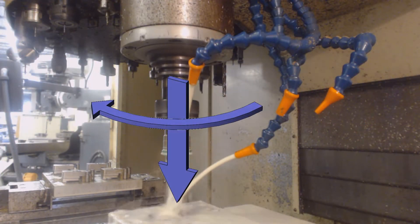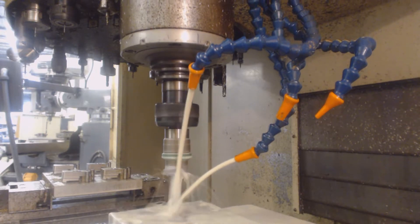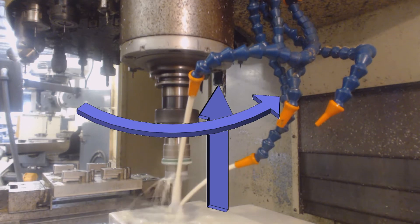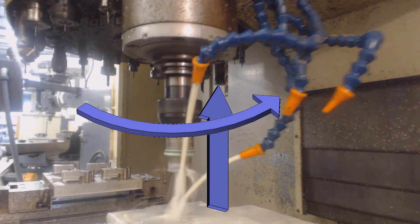With the right-handed tapping cycle, the spindle will spin clockwise while the tool feeds at the specified feed rate from the R-plane to the program Z-depth. Once at depth, the spindle will reverse and feed out of the hole to the R-plane.